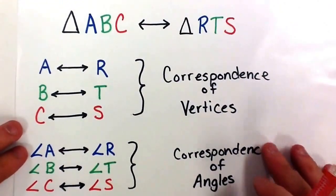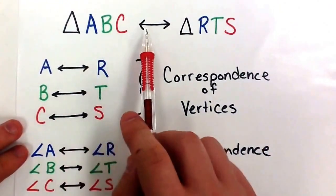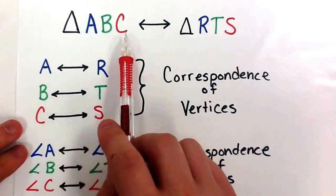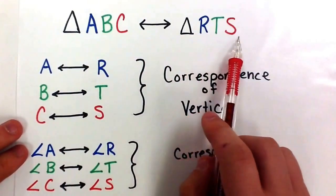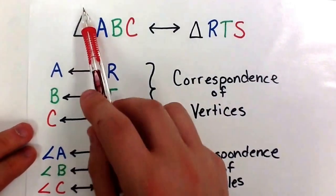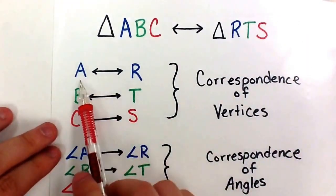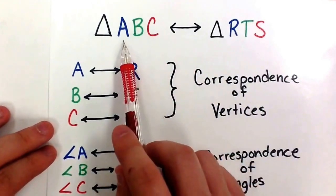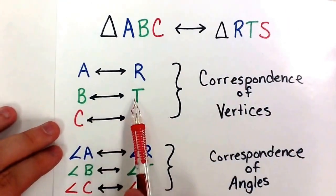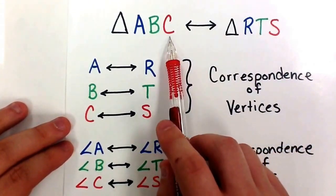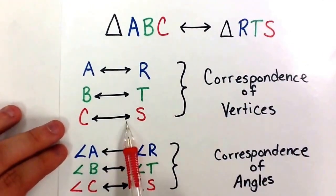Before we begin, I want to re-look at what we talked about in class. If we have two triangles and they correspond — this double arrow symbol means 'correspond' and this symbol means 'triangle' — so triangle ABC corresponds to triangle RTS. When looking at the correspondence of vertices, we're looking at just the points on the triangle. Point A corresponds to point R, B corresponds to T, and C corresponds to S.